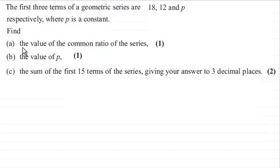And we've got to find, in the first part, the value of the common ratio of the series for one mark. And then, for part b, the value of p for one mark, and in c, the sum of the first 15 terms of the series, giving your answer to three decimal places for two marks.